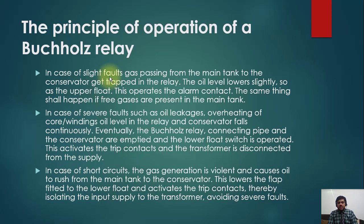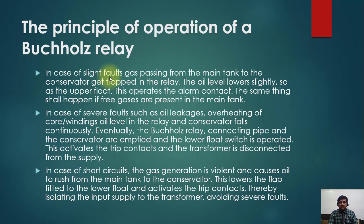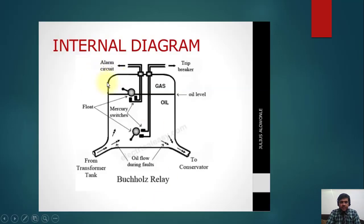There are three conditions by which tripping can occur: first, if the oil level drops so low that it falls below the Buchholz due to oil drainage; second, if there is a small fault slowly developing, air gradually builds up and operates the alarm; third, in the case of a severe fault, there is a rush of oil from the main tank to the conservator tank which operates the Buchholz trip.